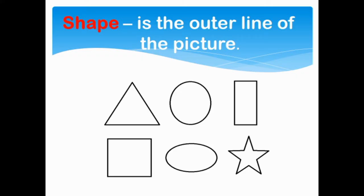Shape means outer or outline of the picture. It has two dimensions, the width and the length.